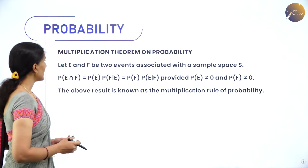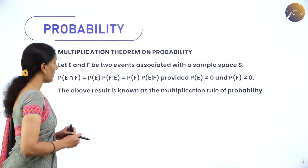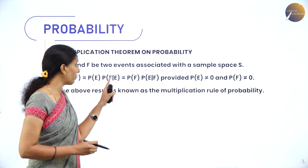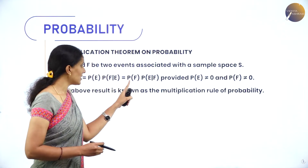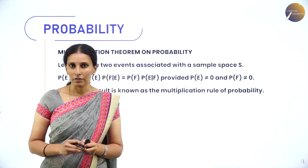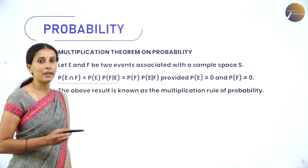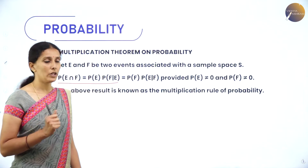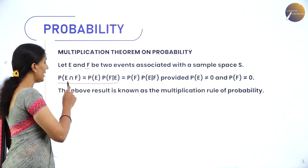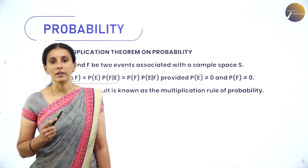Let E and F be two events associated with the sample space S. Then P(E∩F) is given by P(E)·P(F|E) — that is, the probability of E multiplied by the conditional probability of F given E has already occurred. Or we can write it as P(F)·P(E|F), provided probability of E and probability of F are non-zero events. E∩F denotes the simultaneous occurrence of two events.